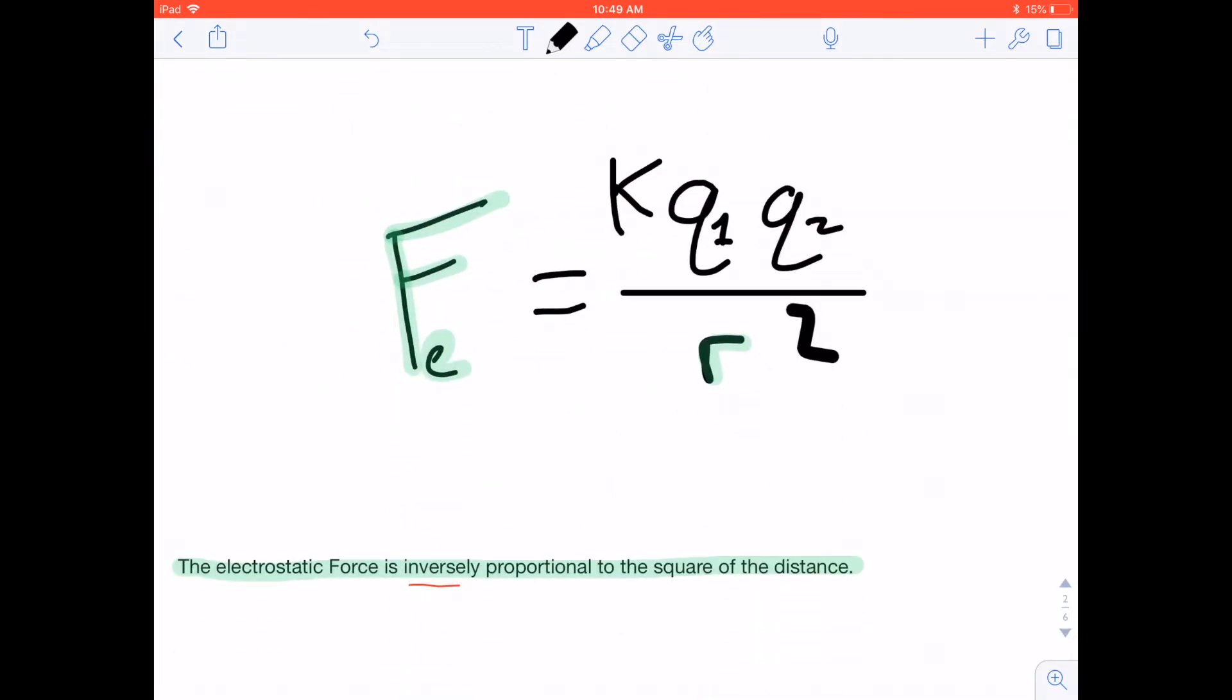Now, the best way to understand this square thing is to look at some data. It's not just an inverse relationship. It's inversely proportional to the square.